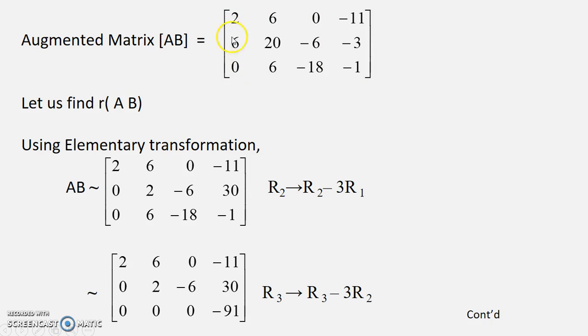Let us convert this into 0. So this can be 0 by subtracting 3 times row 1 from R2. So this is obtained. To avoid a fraction here I have not divided this by 2. We will do it later.